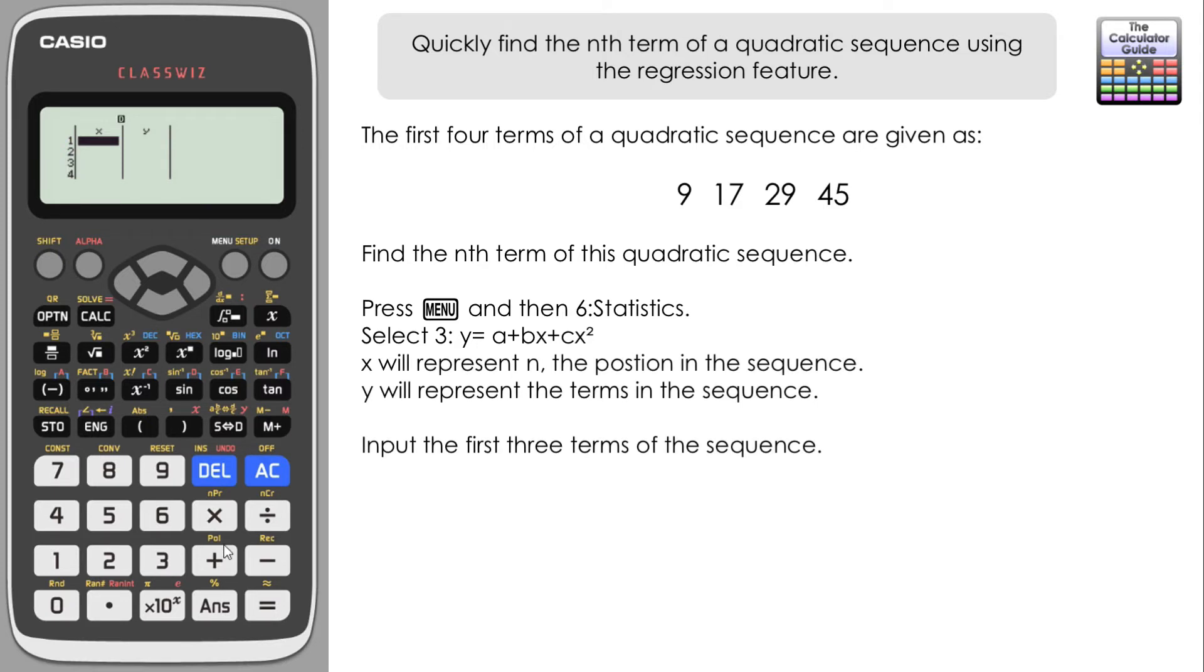We're going to press 3 and we've got two columns here. Now in the x column, x is going to represent our n values, so essentially we have the first term, the second term, third term, fourth term, and so on. We need to do at least three terms. In fact, that's what we're going to do - we're going to do three terms and then we're just going to check that with the fourth term that we're given using table mode.